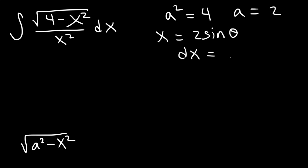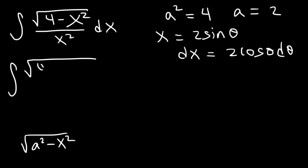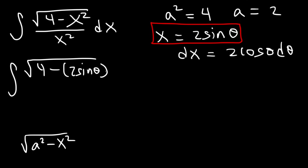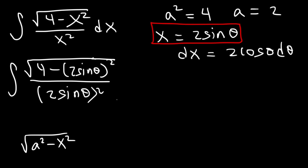So dx is going to be the derivative of 2 sine theta, which is 2 cosine theta d theta. Now we're going to have the integral of the square root of 4 minus 2 sine theta squared, divided by x squared which is also 2 sine theta squared. Then we replace dx with 2 cosine theta d theta.